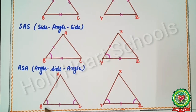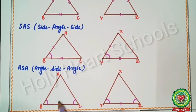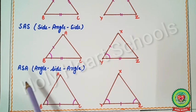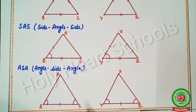Next is ASA — Angle Side Angle. In triangles ABC and XYZ, if angle B = angle Y, side BC = side YZ, and angle C = angle Z, we are taking angle, then side, then angle. This test is called ASA — Angle Side Angle.